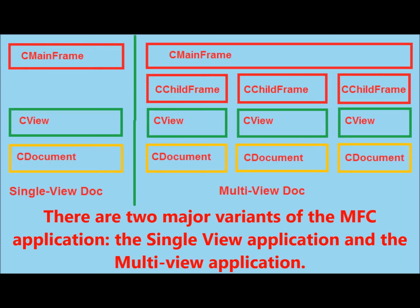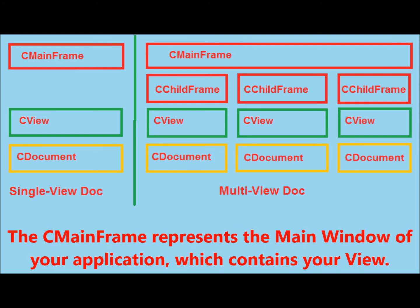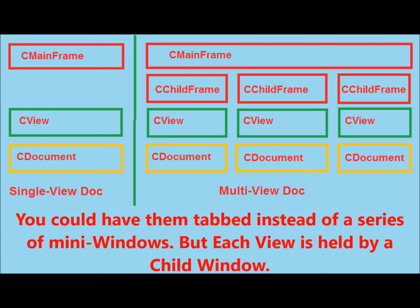There are two major variants of the MFC application: the single-view application and the multi-view application. In a single-view application, you only have one view shown at a time, therefore you might have the CMainFrame but no CChildFrame. The CMainFrame represents the main window of your application, which contains your view. If you have a multi-view, then you will have a CChildFrame class, as your mainframe will host many child windows. You could have them tabbed instead of a series of mini windows, but each view is held by a child window.